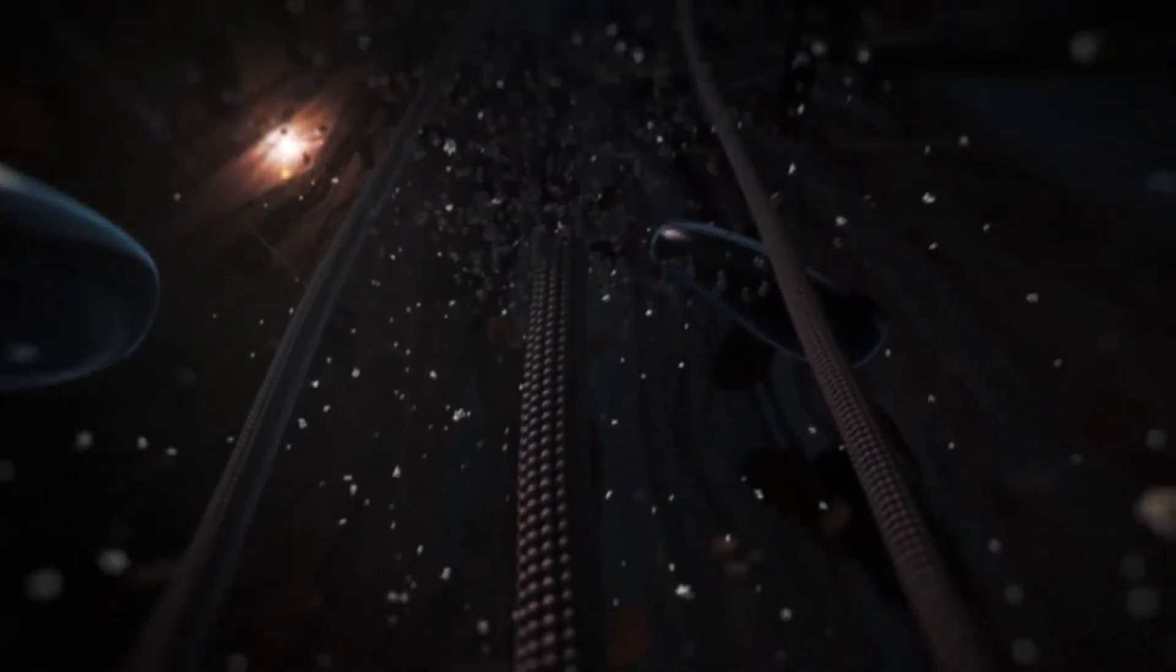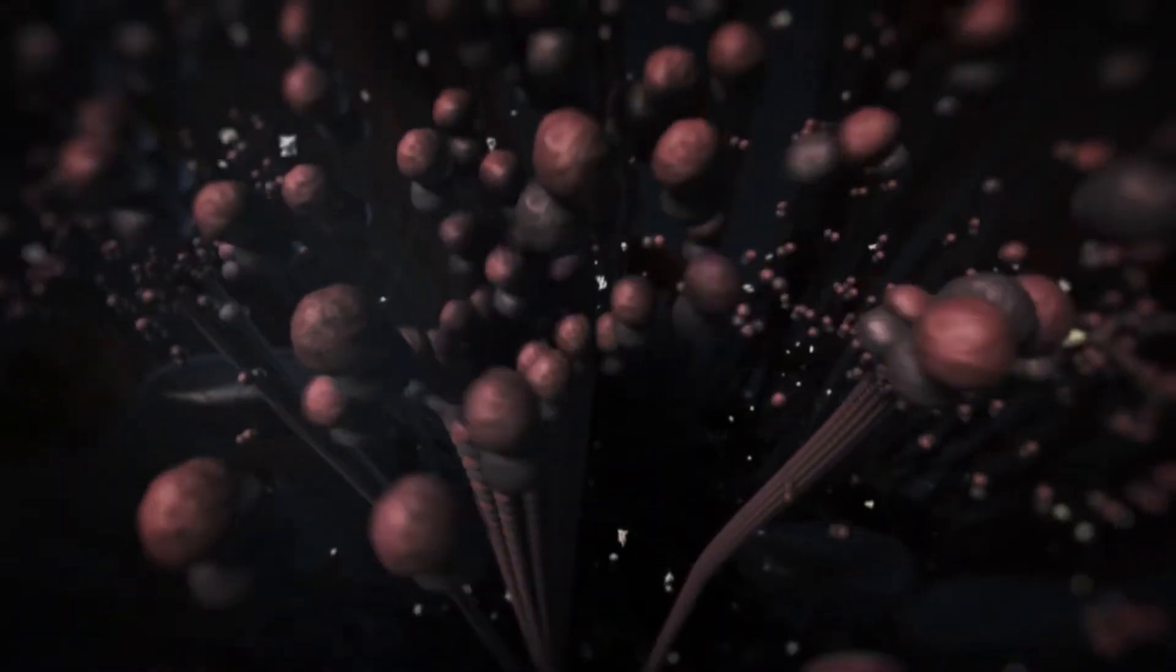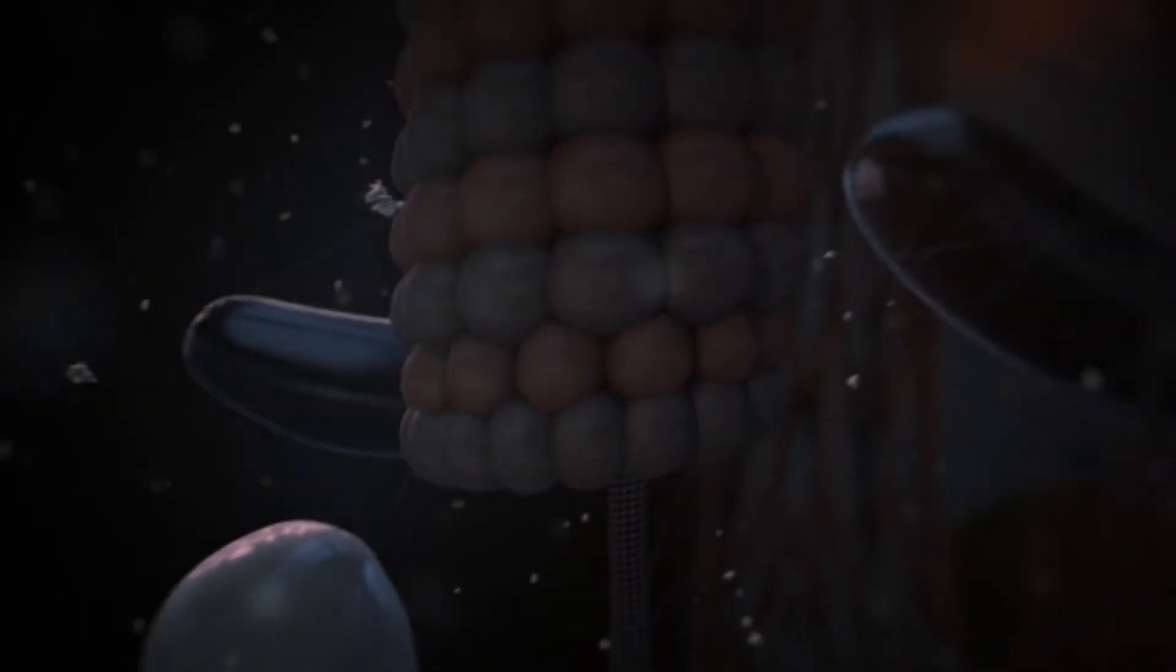Microtubules built up from tubulin subunits are dynamic structures, with a fast-growing and shrinking plus-end and a more stable minus-end. They have a unique organization in neurons.